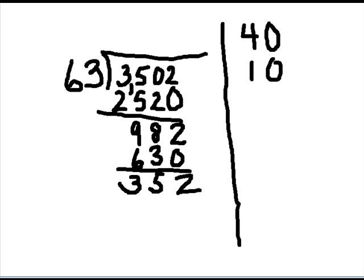63 into 300. I knew 10 times it was 630. Half of 10 is 5. Half of 630 would be 315. I am going with 5. 5 times 3 is 15. Carry the 1. 5 times 6 is 30. Plus 1 is 315.